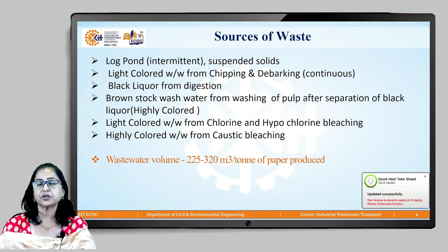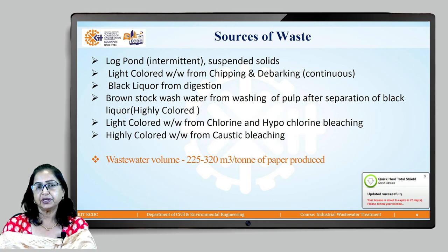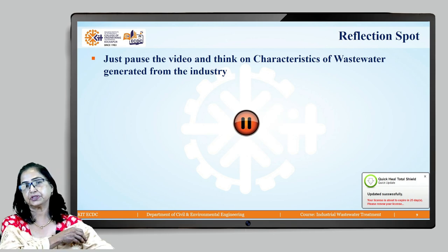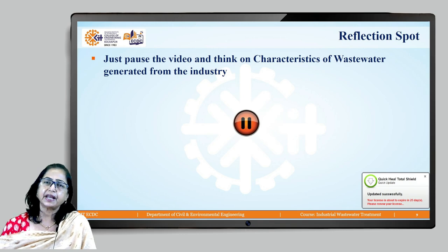Looking at the sources of waste, most of the waste comes from the pulping process. The log pond produces intermittent wastewater discharge consisting mainly of suspended solids. Chipping and debarking produce light-colored wastewater. The strongest source of wastewater is black liquor from the digestion process, followed by brown water from fiber washing, light-colored water from chlorine and hypochlorite bleaching, and highly colored wastewater from caustic bleaching.